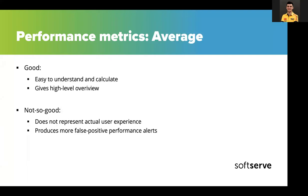What about averages? Average response time is an okay high-level metric because it's easy to understand, but it doesn't actually represent real user experience. Averages also produce false positive performance alerts because the average is volatile — it can be dragged by slow responses. At some point you'll stop reacting to these alerts and miss actual performance degradation.